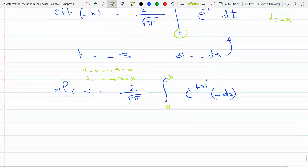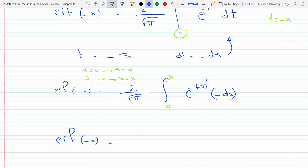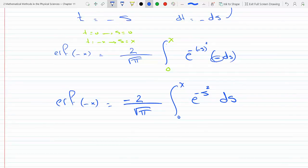And so now continuing on here, erf of minus x equals 2 over square root pi, integral 0 to x, e to the minus s squared. And there's a minus here and there's a minus here, ds. So this minus here is this minus here. Notice that I have proven that erf of minus x is equal to minus erf of x.